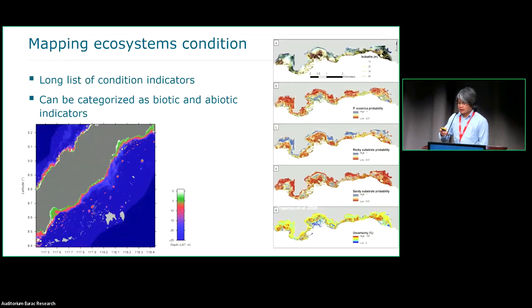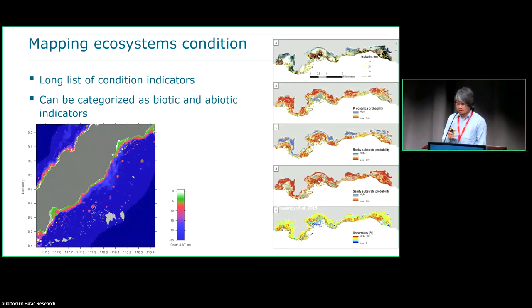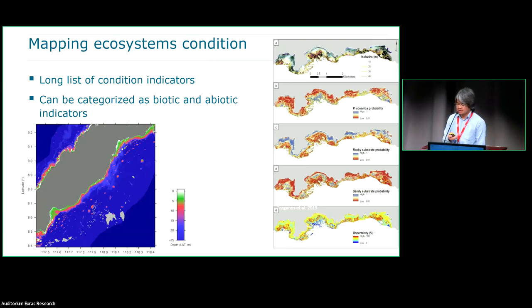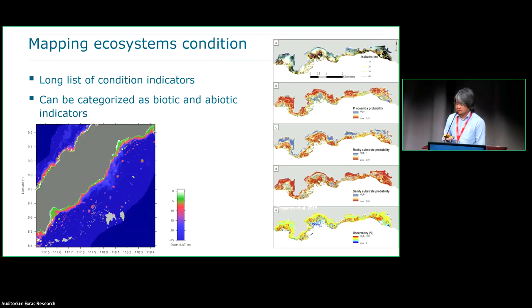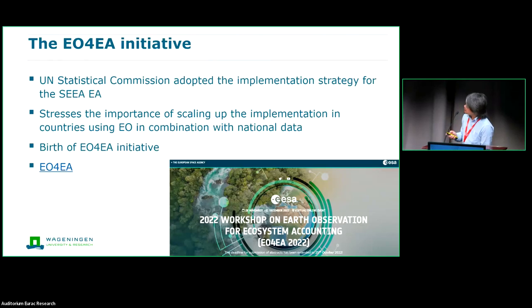There's a slide about ecosystem condition. It's actually a long list of condition variables in the SEEA framework guidelines, which can be categorized as biotic and abiotic. Biotic and abiotic conditions include things like water salinity and so on.